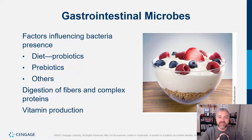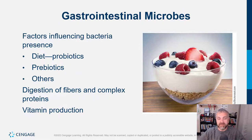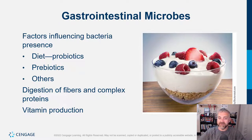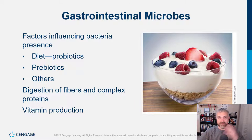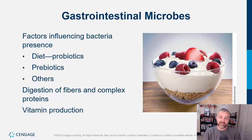Gastrointestinal microbes: the biggest factors shaping your microbiome happened as you were born and early in life. It takes about three years to develop an adult microbiome, so those first three years are critically important. Did you need antibiotics? Did you play in the dirt? Were you born vaginally or via C-section? Were you breastfed? What was your parents' microbiome? What were the microbes in your home? All these things influence which microbes are inside your gut.